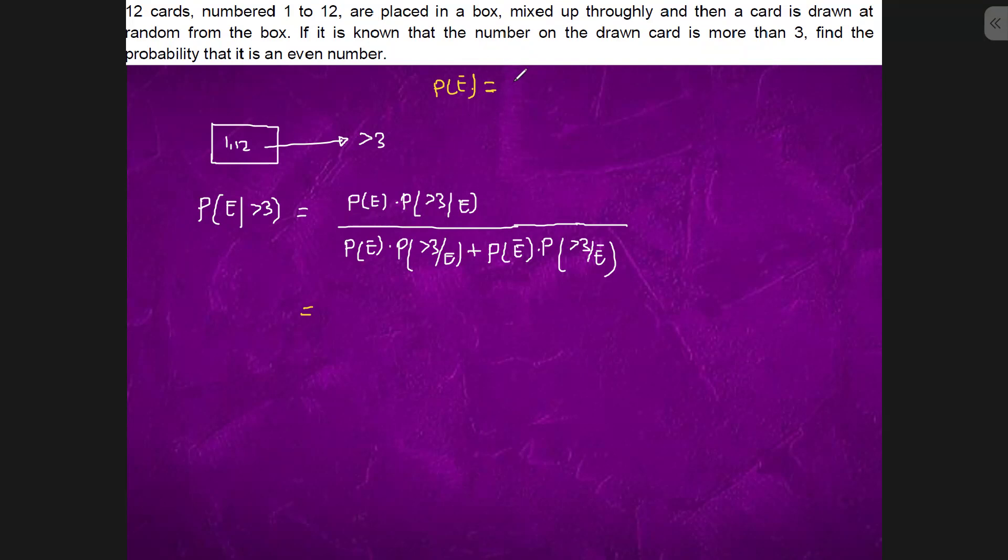Probability of even number is 2, 4, 6, 8, 10, 12. So it is 6 upon 12.